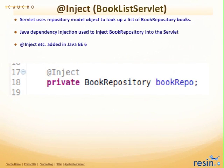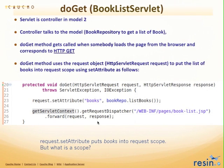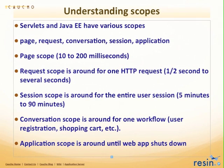The doGet method works with request scope. Scope is basically the lifecycle of an object. In Java and servlets there are many different scopes: page, request, conversation, session, and application. Page scope is just within the JSP page; request scope is just a single request from the browser.